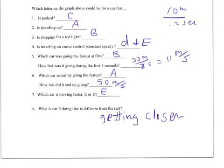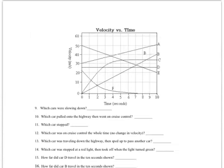Let's go to the next page. Notice on this one it's a velocity versus time graph, so the y-axis is velocity. This means something very different. When I look over here, this says you're going 10 meters per second, 20, 30, 40 — this is telling me how fast you're going instead of how far you've gone.